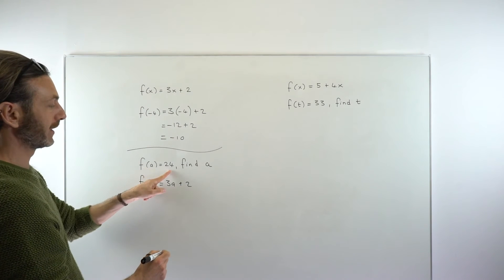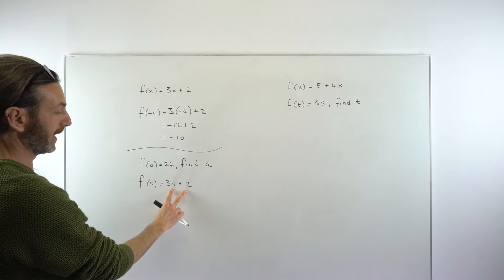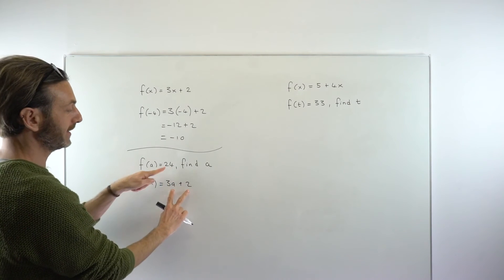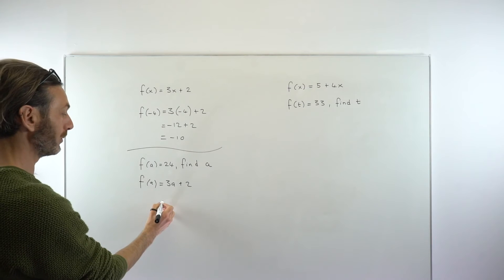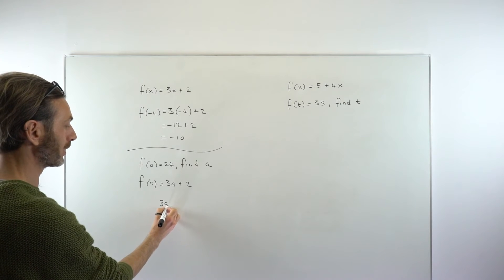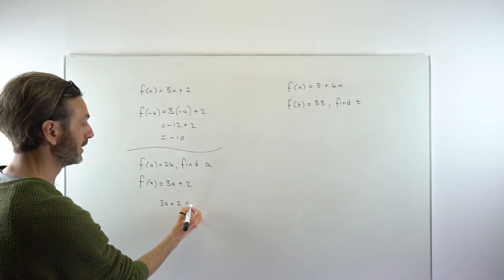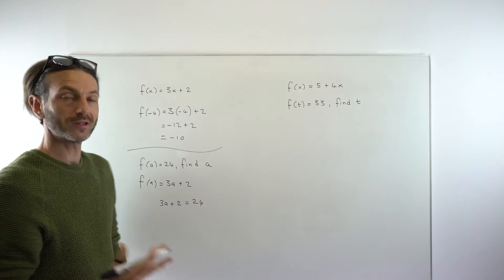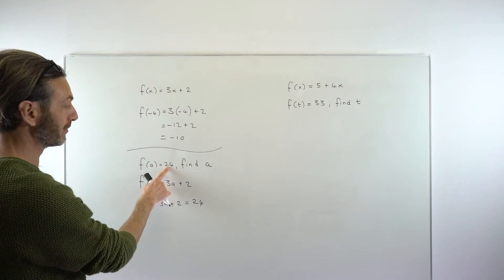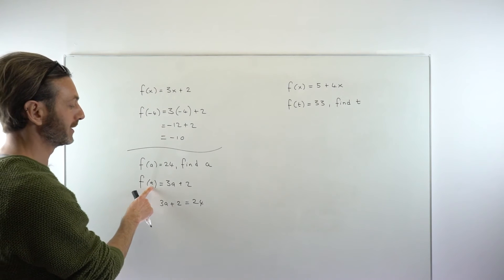But we're also told that f of a is 24. So if f of a is that and f of a is also that, then these two things must also be equal. So essentially, we can just make a little equation where 3a plus 2 is equal to 24. And that's essentially how you do these questions. You just set the number equal to the function with the value subbed in.